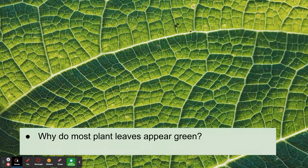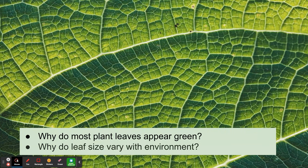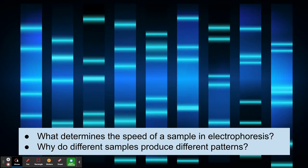You go out in the garden and notice that almost all — but not all — of the leaves you see are green. Why do plant leaves appear green? That's a very interesting phenomenon. But also, you might notice that leaves vary with environment: the ones in the shade tend to be larger than the ones in sunlight, which is another observation worthy of investigation.